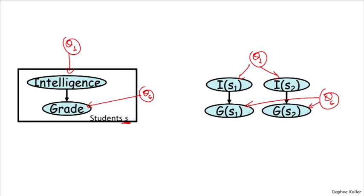Sometimes in many models we will include those parameters explicitly within the model, but often when you have a parameter that's outside of all plates, we won't denote it explicitly. So we just omit it, as we did in the original diagram before I annotated it.